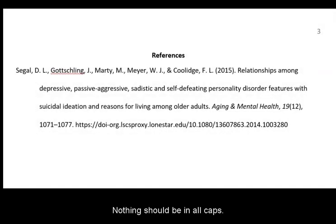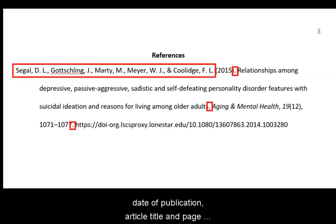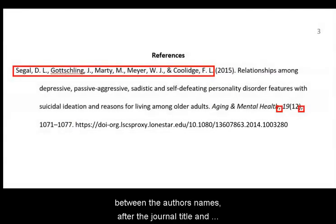Nothing should be in all caps. We also need to make sure that punctuation is correct. There should be periods after the author's initials, date of publication, article title, and page numbers. There should be no period after the DOI or URL. There should be commas between the author's names and after the journal title and issue number.